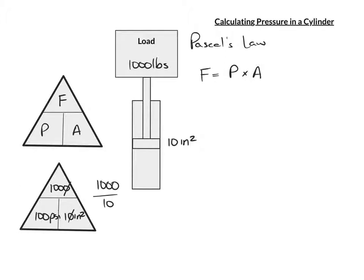So that means if we put a small gauge, or a big gauge, doesn't matter, a gauge in the side of the cylinder, the gauge would read 100 psi. And 100 pounds per square inch would be what's required to hold the load.